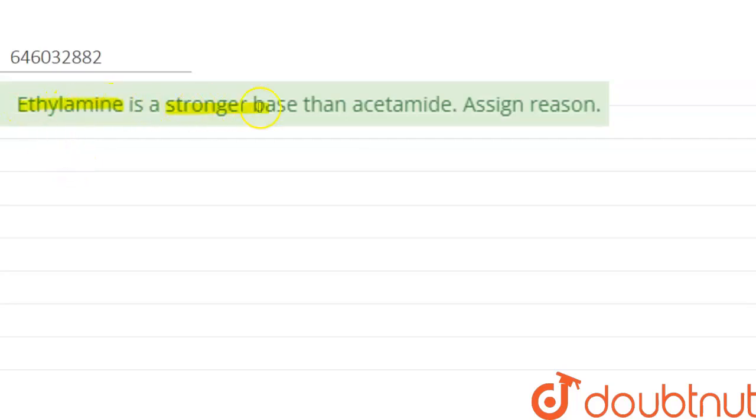So if you look at the structure of ethylamine, we have C2H5-NH2. There is a lone pair present on nitrogen. And if you look at the acetamide, the structure of acetamide is CH3-C double bond O-NH2. We have an amide group and here we have an amine group.